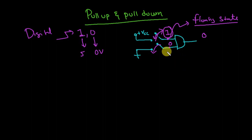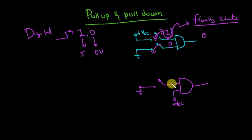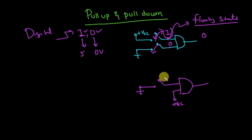We don't know what the voltage is at that point. To avoid the floating condition — for example if I close this switch I get 0, but if I open it, it's in a floating condition. We have to restrict it to either 0 or 1. If I close it, it's 0; if I open it, how do we make it 1?